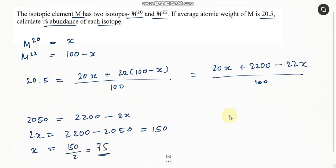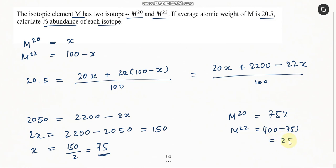And there's your answer. M20 is equal to 75% and M22 is equal to 100 minus 75, that is equal to 25%. That's your answer. I hope this helped you out. Have a great day everyone. Thank you very much.